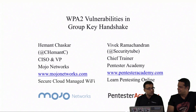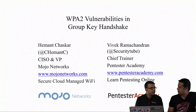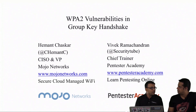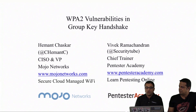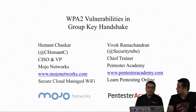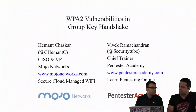To recall, there are two types of group keys. One is called GTK, group temporal key. That's used when the access point sends broadcast or multicast data packets to clients in an encrypted fashion. And there is one more called IGTK, integrity group temporal key. That's used when the access point sends broadcast management frames to the clients — not for encryption, but for authenticity of those frames.